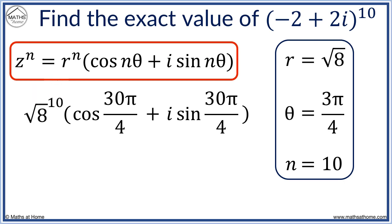Root 8 to the power of 10 equals 32,768. Cos 30 pi over 4 equals 0, and sine 30 pi over 4 equals minus 1.